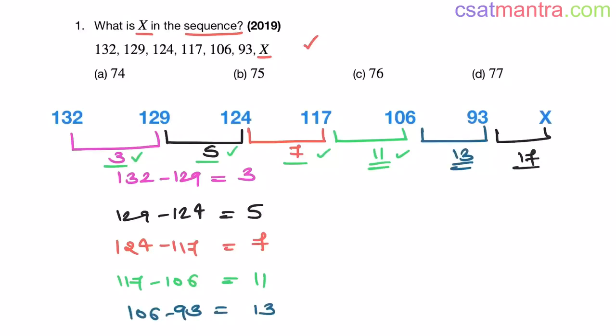So 93 minus X equals 17. 93 minus 17 is equal to X. This is 76. So the X value is 76, my friends. So our answer is C.